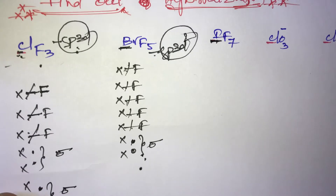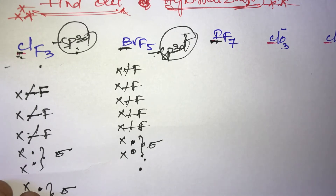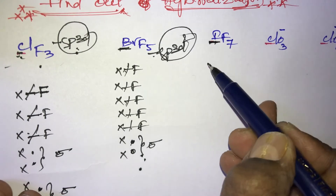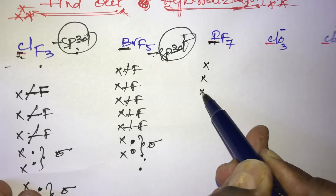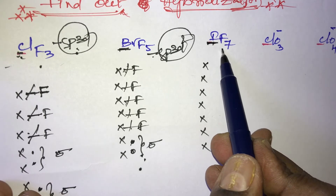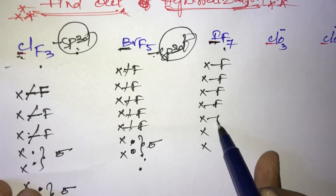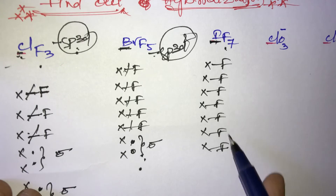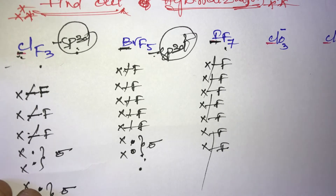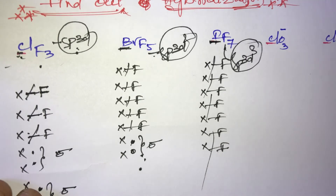In IF₇, what is the hybridization of iodine? Iodine belongs to the 17th group elements, so maximum bonding is seven. Here seven fluorines are present, each occupying a single bond, giving seven sigma bonds total. There are no lone pairs. Therefore, the hybridization is sp³d³. This is very important.